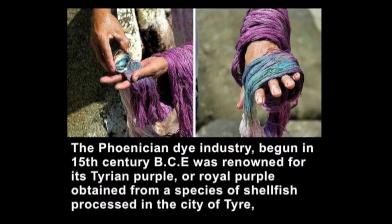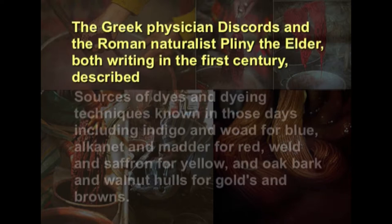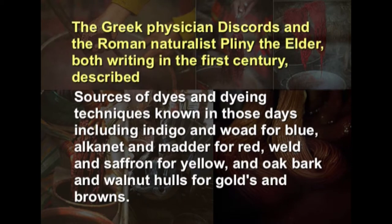Among the ancient people, the Egyptians of the Middle Kingdom not only dyed textiles but also understood the use of mordants. The Phoenician dye industry, begun in the 15th century BCE, was renowned for its Tyrian purple or royal purple, obtained from a species of shellfish processed in the city of Tyre, producing a range of colors from red to blue including violet. The Greek physician Dioscorides and the Roman naturalist Pliny the Elder, both writing in the first century, described sources of dyes including indigo and woad for blue, alkanet and madder for red, weld and saffron for yellow, and oak bark and walnut hulls for golds and bronze.